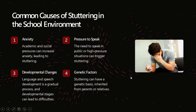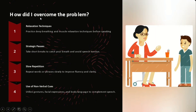How did I overcome the problem? Number 1: Relaxation techniques. Practice deep breathing and muscular relaxation techniques before speaking. Number 2: Strategic pauses. Take short breaths to catch your breath and avoid speech tension. Number 3: Slow repetition. Repeat words or expressions slowly to improve fluency and clarity.